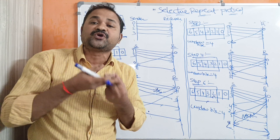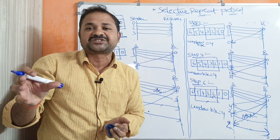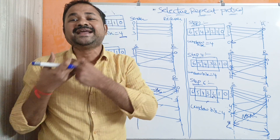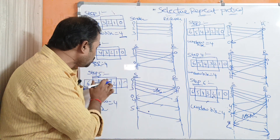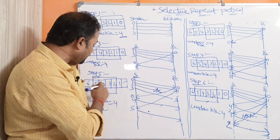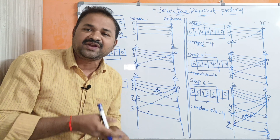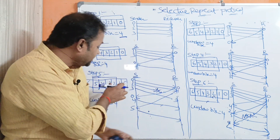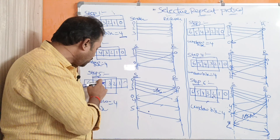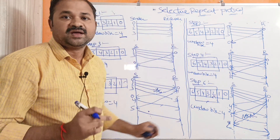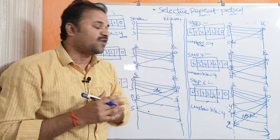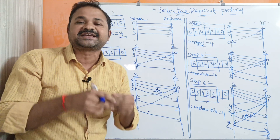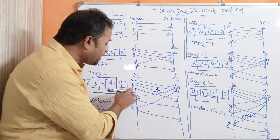In Go-Back-N protocol, the sender would retransmit all the frames in the current window one more time, even though those frames were already sent. In the current window we have frames 2, 3, 4, and 5 — and all of them would be retransmitted. Whereas in Selective Repeat Protocol, only that lost frame is selected and repeated — it is retransmitted once again. So here the lost frame is frame 2, so only frame 2 will be retransmitted one more time.